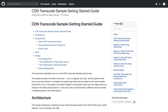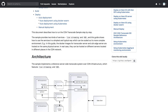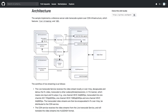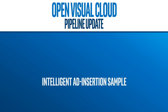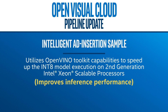Also, the team has new documentation for the Content Delivery Network Transcode sample, provided in the links. Finally, the Open Visual Cloud team updated their intelligent ad insertion sample. It utilizes OpenVINO Toolkit capabilities to speed up the Int 8 model execution on second generation Intel Xeon scalable processors, which improves inference performance.